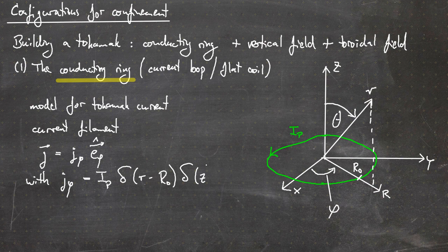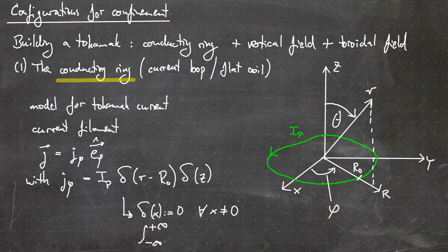The current filament can be modeled by j equal to j_phi times e_phi, the unit vector in the phi direction, where j_phi is defined as Ip — the plasma current — times the delta function of R minus R_naught, where R_naught is the position where the current filament is located, times the delta function of z. In case you don't know the delta function: it is everywhere zero for every x not equal to zero, and the integral from minus infinity to plus infinity of the delta function dx equals one.